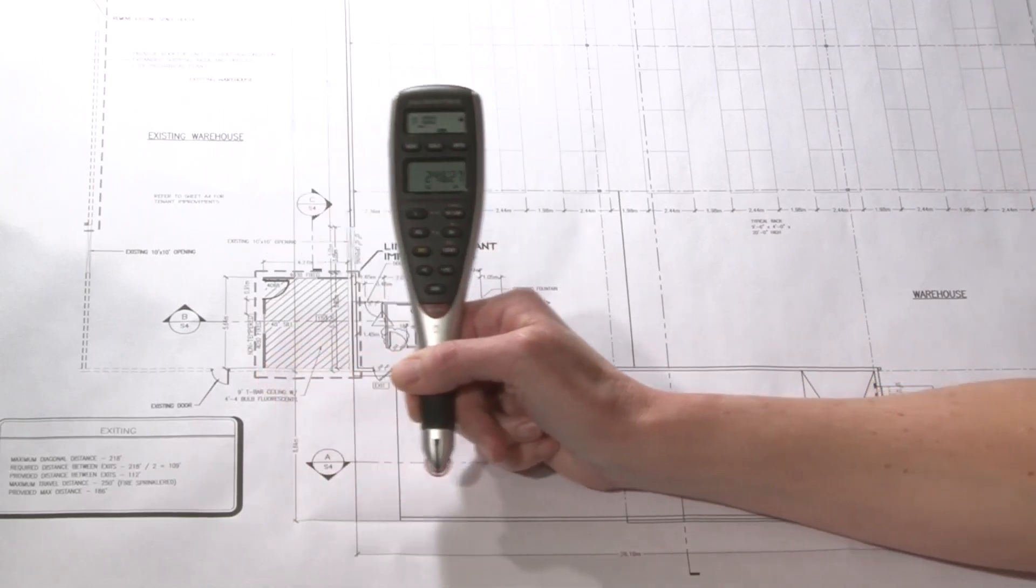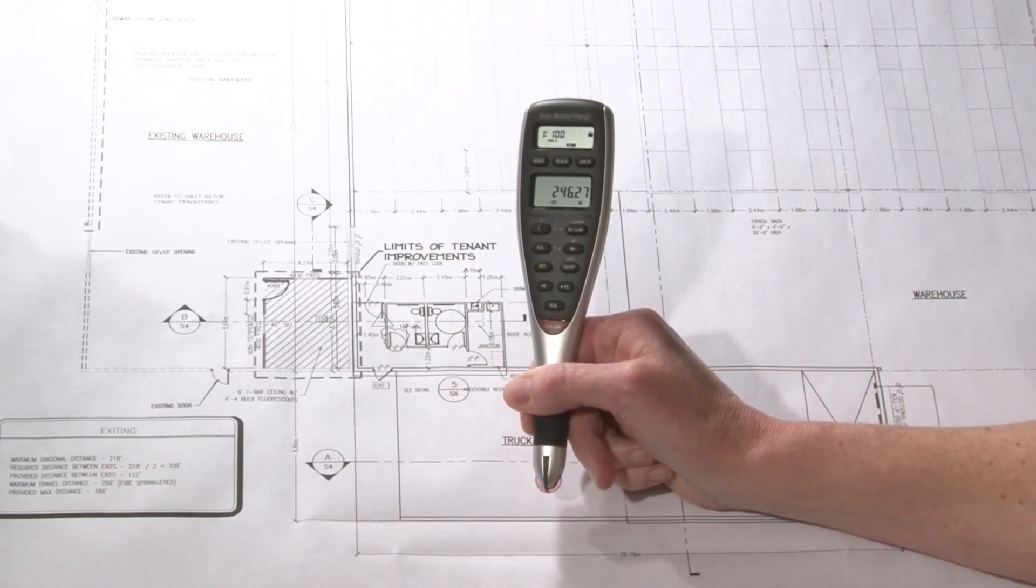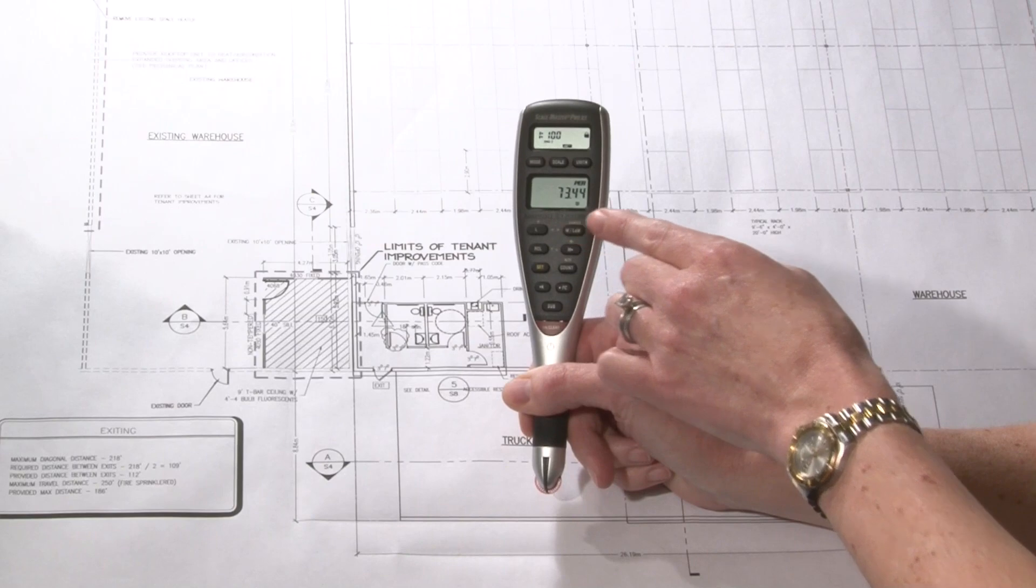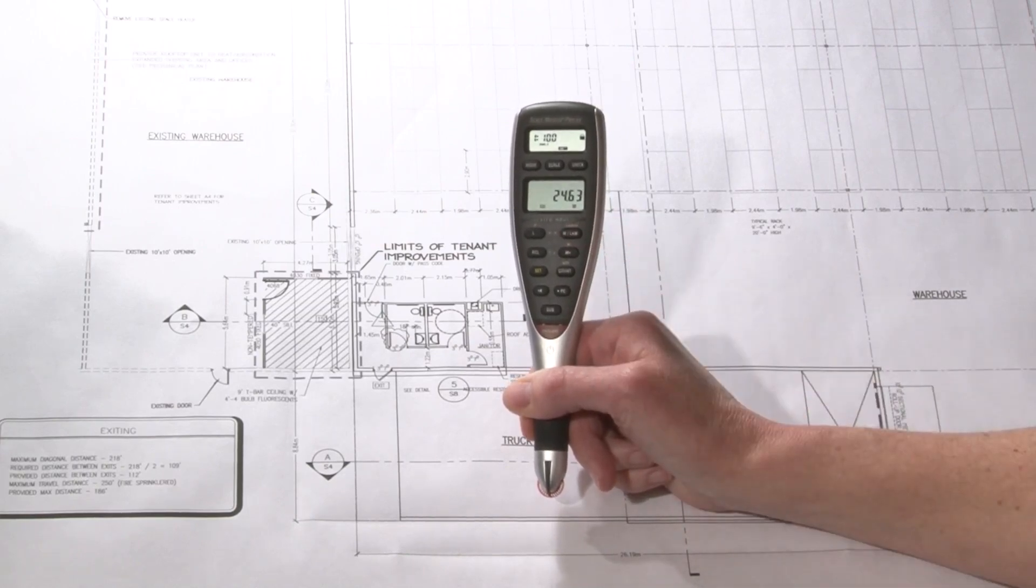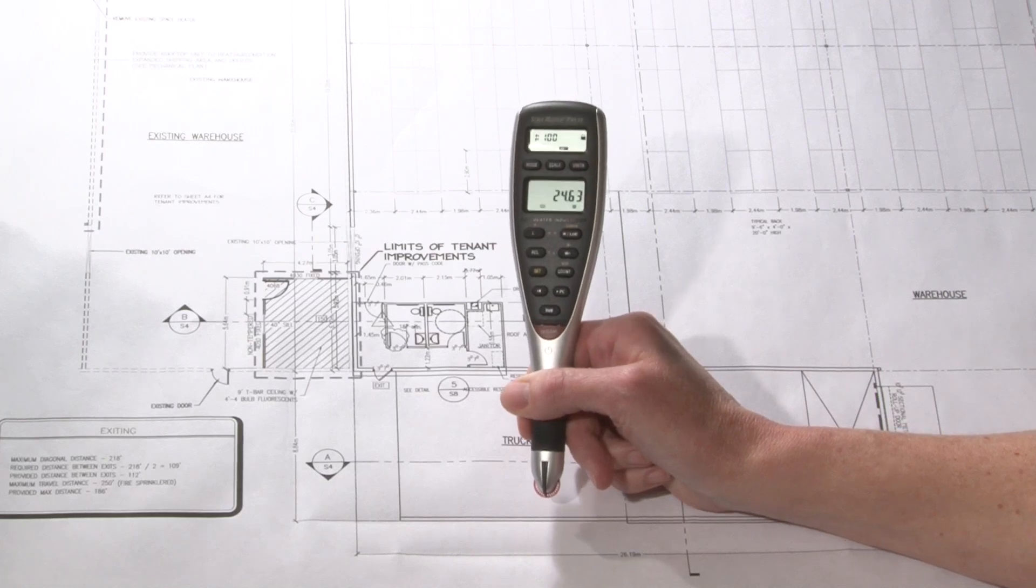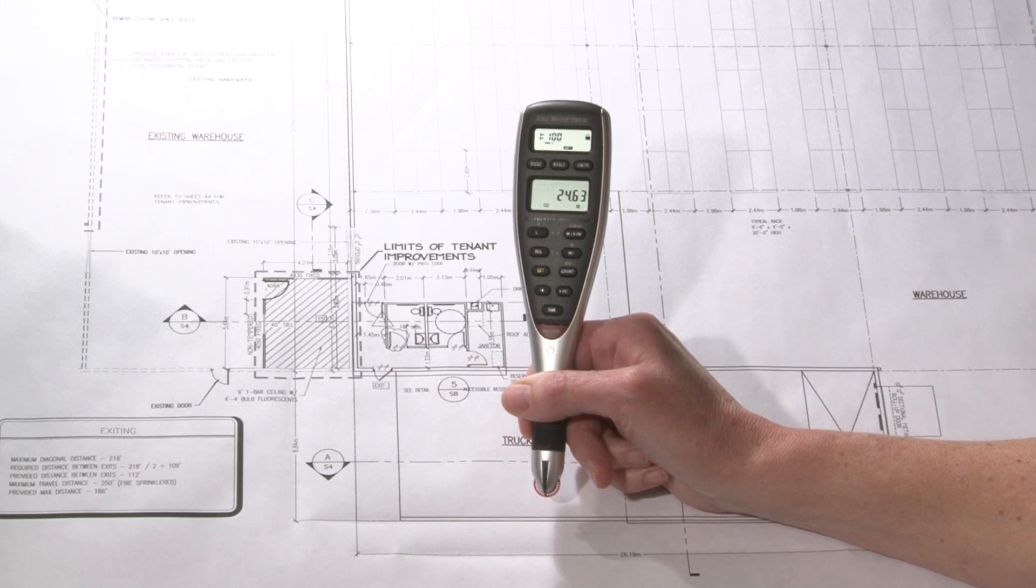I'll label that my width. That immediately shows me the square meters of that area. By pressing length and width again, it shows me the perimeter. And one more press shows me the cubic volume of that area, as I had previously stored a 100 millimeter depth or thickness for that slab.